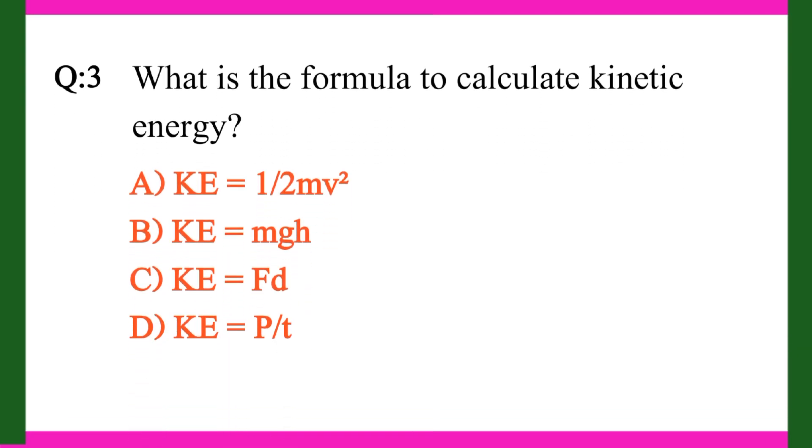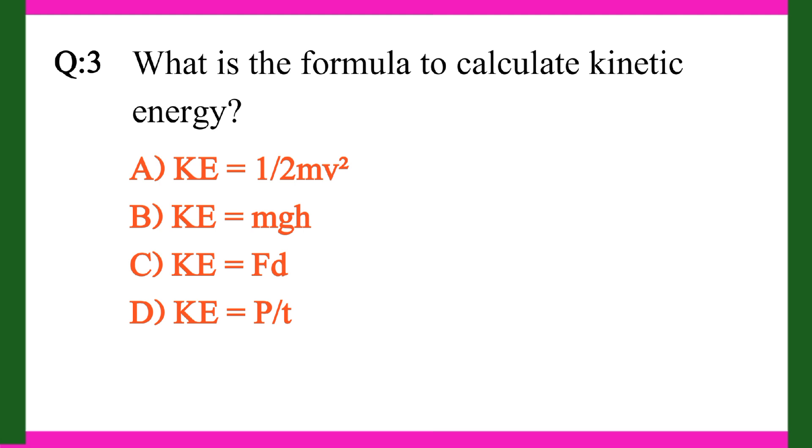Question 3. What is the formula to calculate kinetic energy? A. KE equals one half mv squared. B. KE equals mgh. C. KE equals fd. D. KE equals pt. Right answer is A. KE equals one half mv squared.